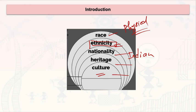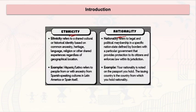Nationality sits below ethnicity in this hierarchy. Nationality is a legal or political membership — it is defined by which country you are a citizen of and what documents you hold. In the case of ethnicity, however, you do not need a passport or official documents. If you share a certain cultural or historical identity, you are part of that ethnicity.